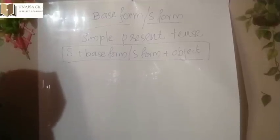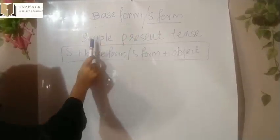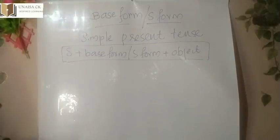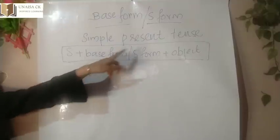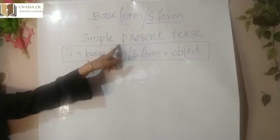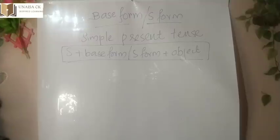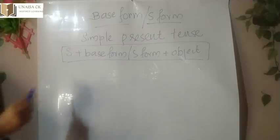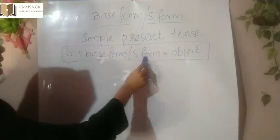Just look at here — base form or S form. This applies in simple present tense. I am not going to teach you tense in detail, as I know it will make you confused. But we use this base form or S form in simple present tense. Simple present tense is the first sub-tense of present tense. So first we need to learn what simple present tense is. The structure is: subject plus base form or S form plus object.